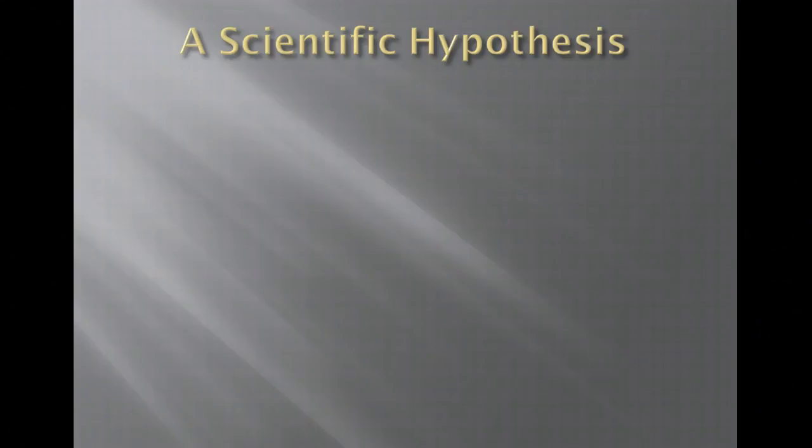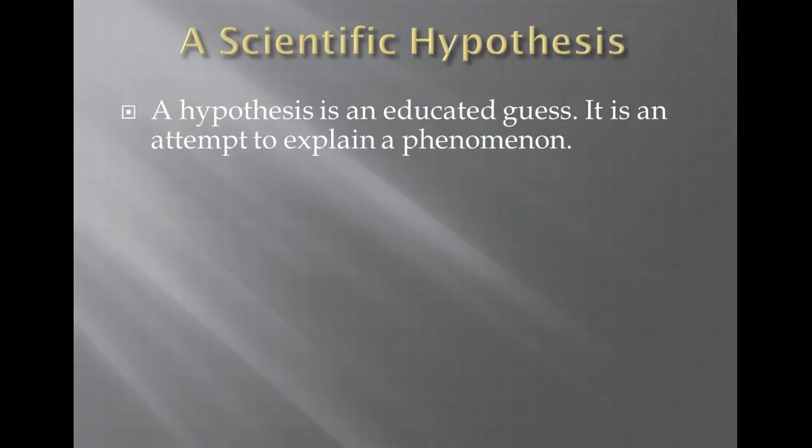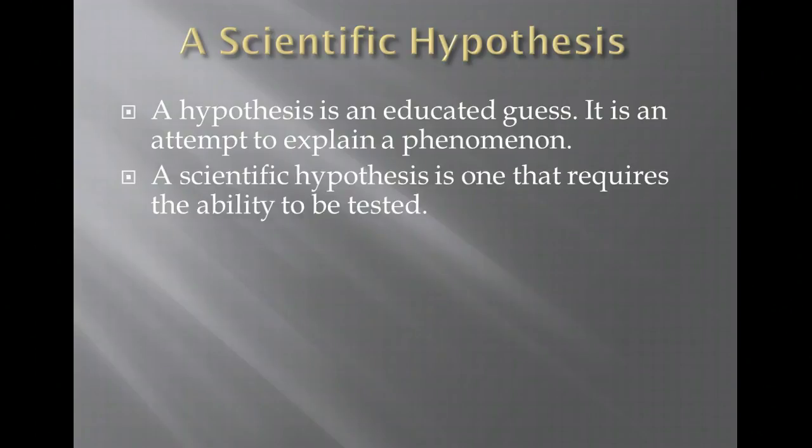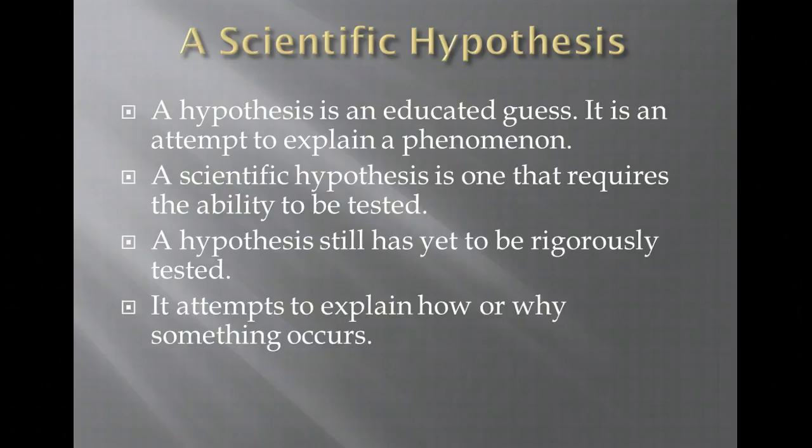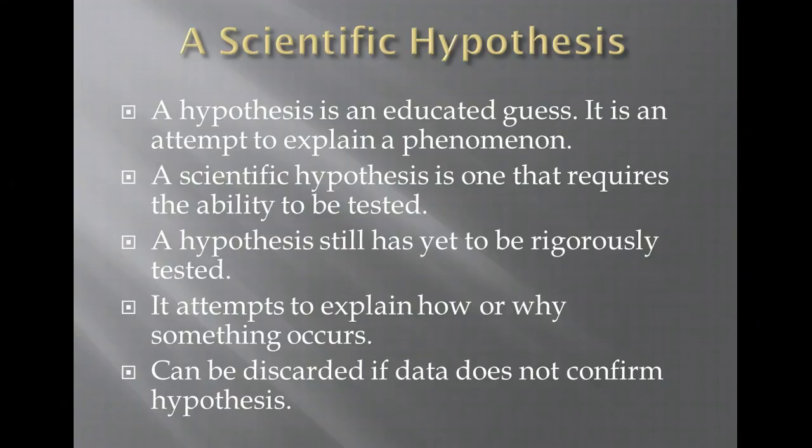That's the difference between a scientific method and an engineering method. Now, a scientific hypothesis is an educated guess. It's an attempt to explain a phenomenon that's observed. It requires the ability to be tested, and even though it's a hypothesis, it has yet to be rigorously tested by other people. It attempts to explain how or why something occurs and can be discarded if data does not confirm the hypothesis. In science, we never prove anything. We either show that our current data either supports or rejects the hypothesis and theories that we have.